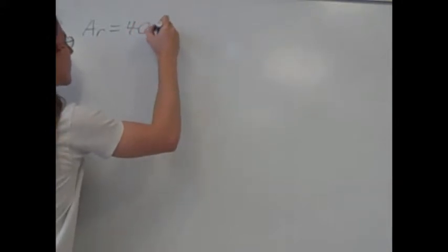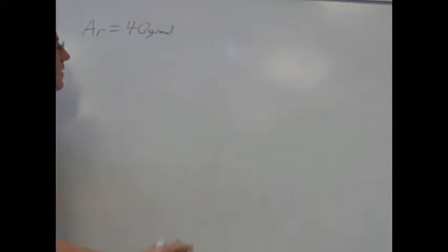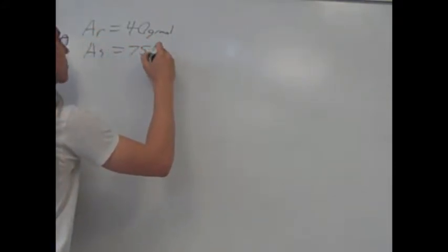So let's get started. In order to solve this problem, first we're going to need some molar masses. We know that argon is 40 grams per mole, and we know that arsenic is 75 grams per mole.